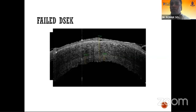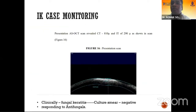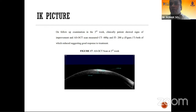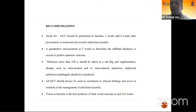Some cases fail — in a failed graft, pachymetry and clarity will not be maintained. You can also monitor infectious keratitis, especially in smear-negative culture cases where you want to objectively monitor treatment response. In a culture-negative case responding to antifungal, corneal thickness and infiltrate thickness were measured at presentation, then at week three and six — the corneal thickness and infiltrate thickness reduced and eventually turned into a scar. Based on this study, a recommendation was made that infiltrate thickness of more than 230 microns should be taken as a red flag sign and additional treatment modalities should be added.